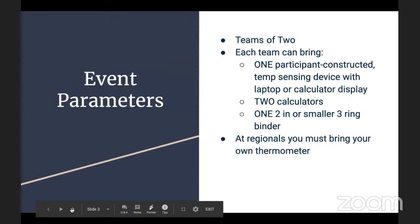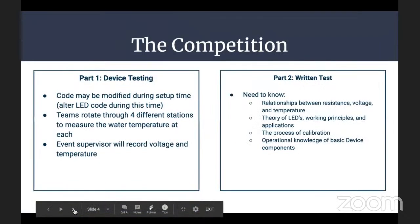Event parameters: You'll be working in teams of two. Each team can bring one participant-constructed temperature sensing device with a laptop or calculator display, two calculators, one two inch or smaller three ring binder, and at regionals you must bring your own calibration thermometer.